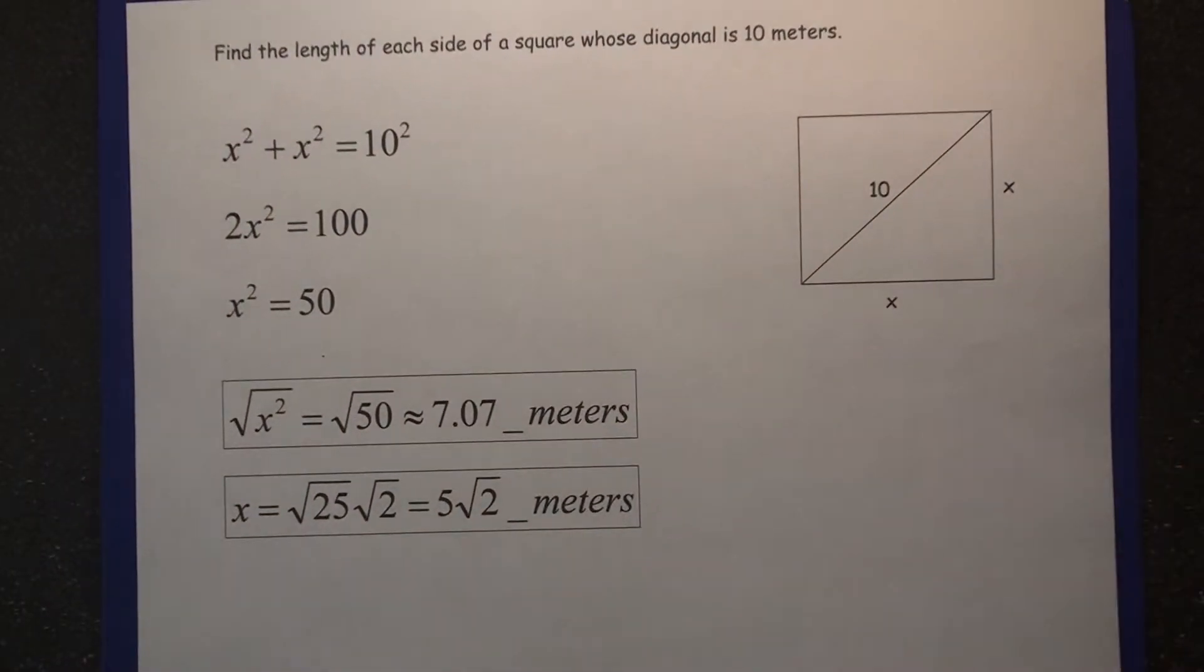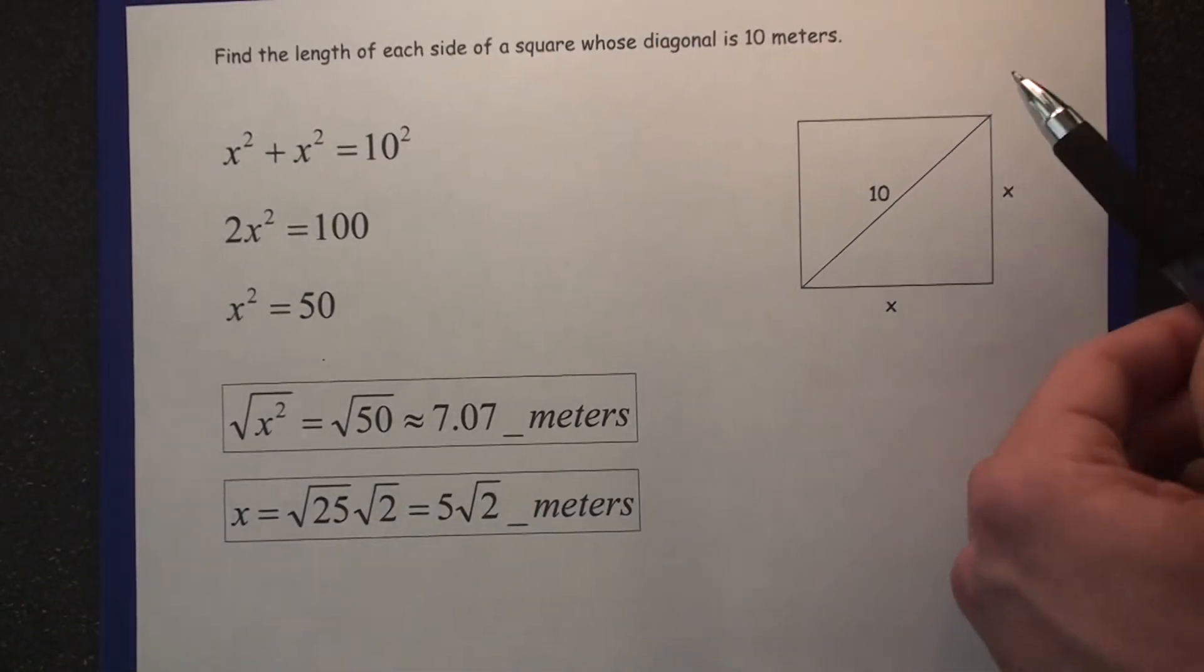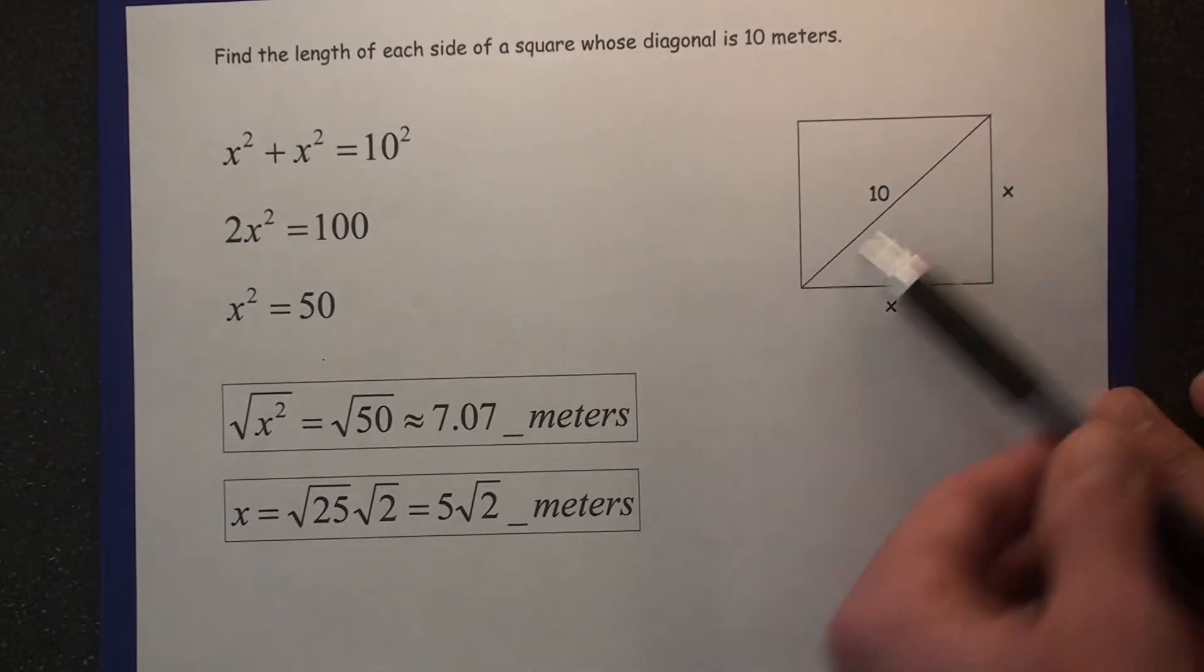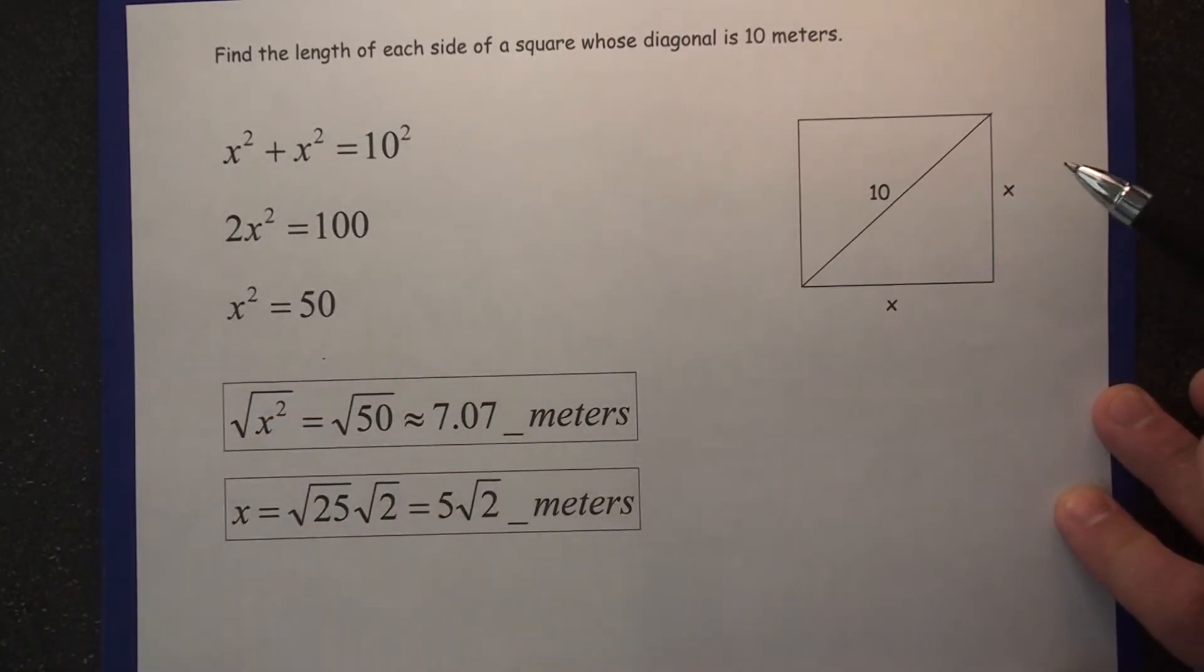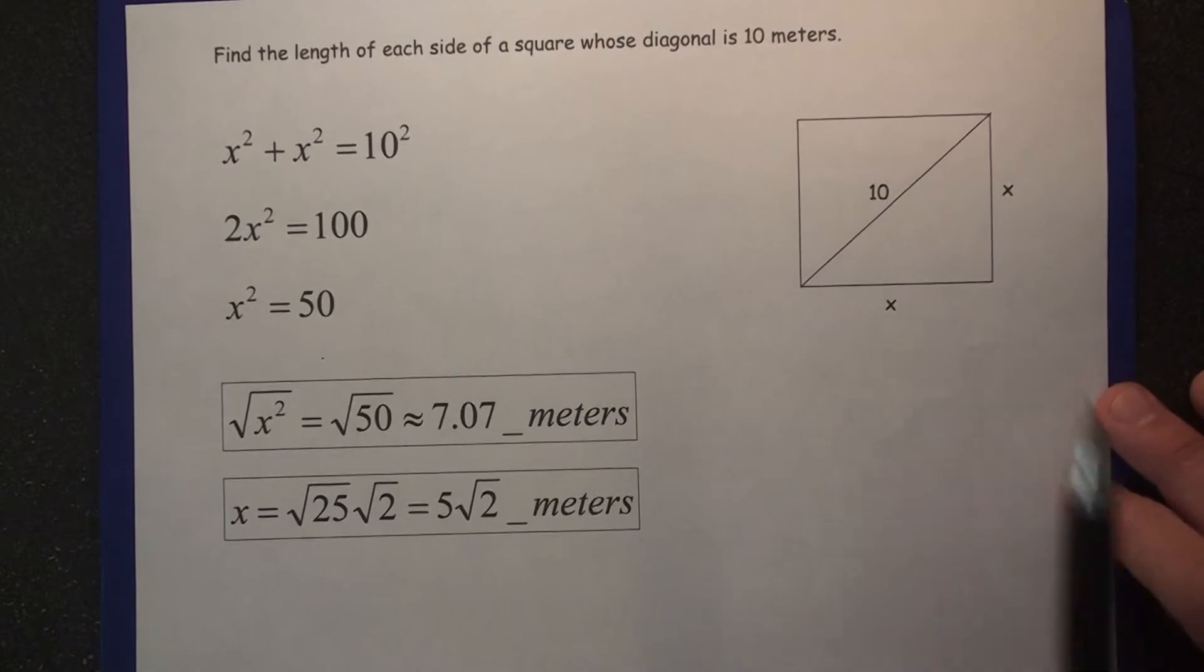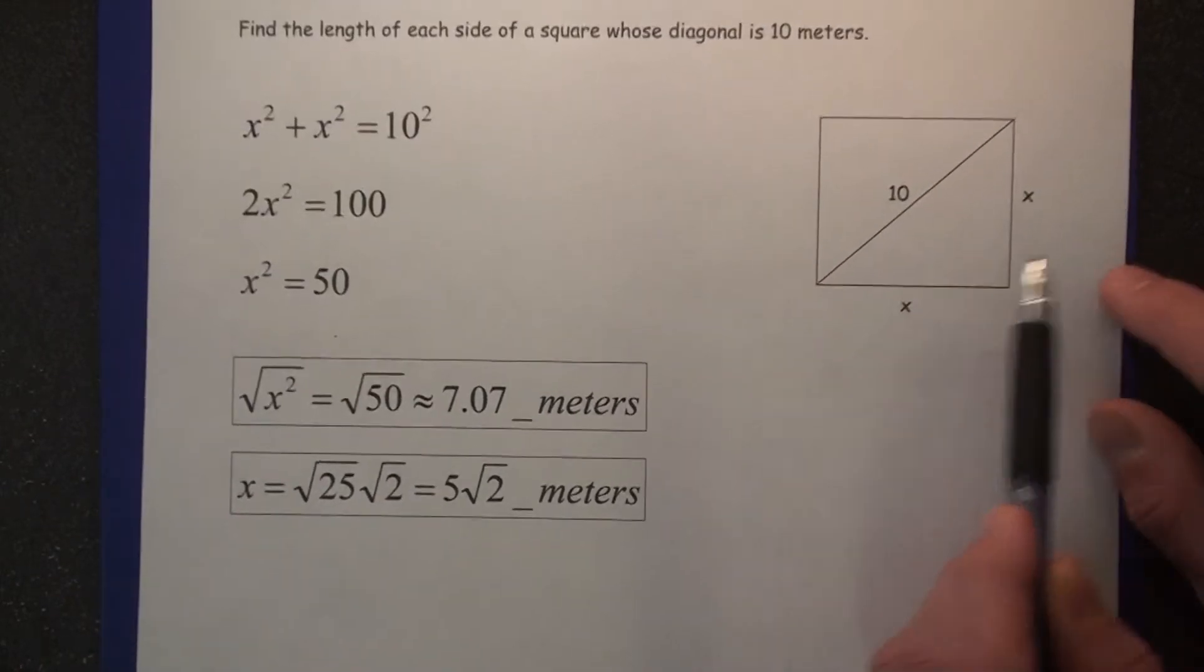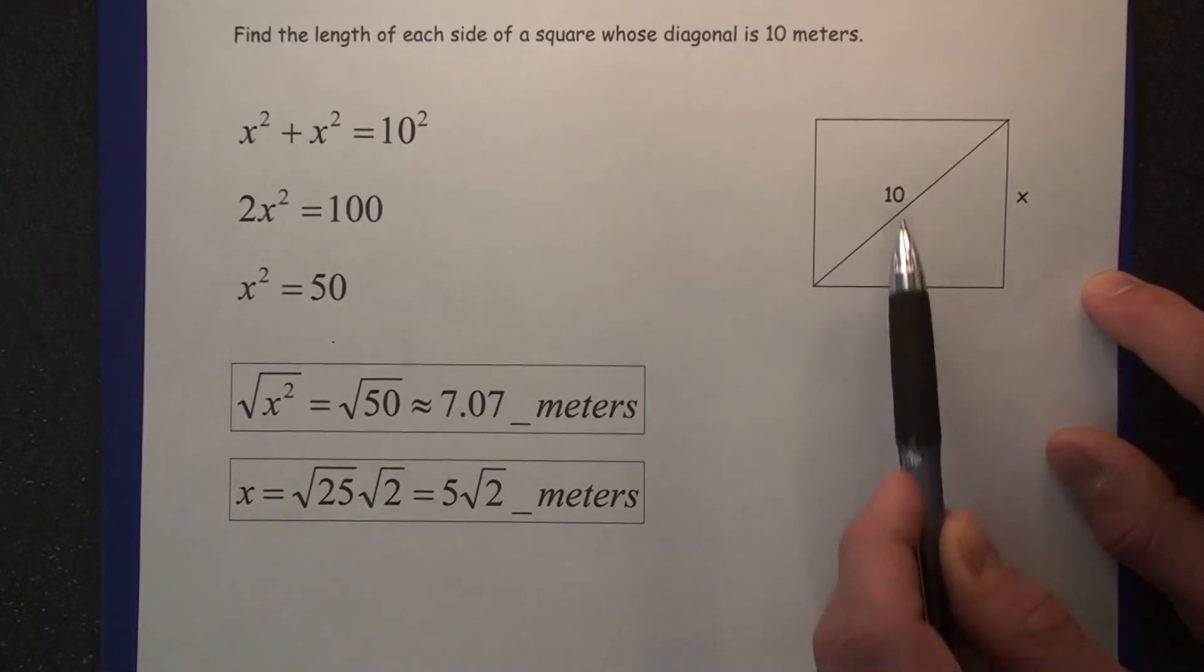Here's a good question. Find the length of each side of a square whose diagonal is 10 meters. So maybe we know that the length of the diagonal of a square is 10. They want us to find the length of each side. Well, therefore, x and x. That gives us a right triangle. x squared plus x squared equals 10 squared. 10 is the hypotenuse.